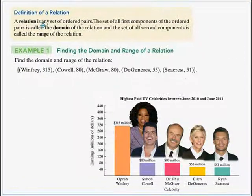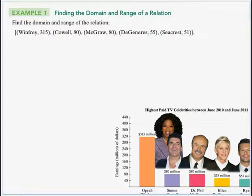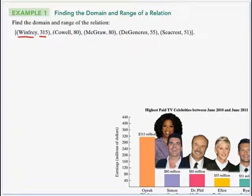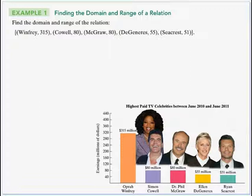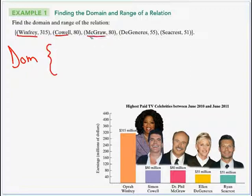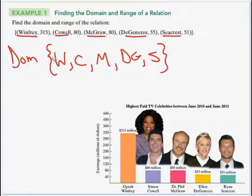In Example 1 we find the domain and range using ordered pairs that don't just use numbers. We have: (Winfrey, 315), (Cowell, 80), (McGraw, 80), (DeGeneres, 55), and (Seacrest, 51). These relate celebrities to their gross salaries in millions. The domain is all the first components — the names: Winfrey, Cowell, McGraw, DeGeneres, and Seacrest.